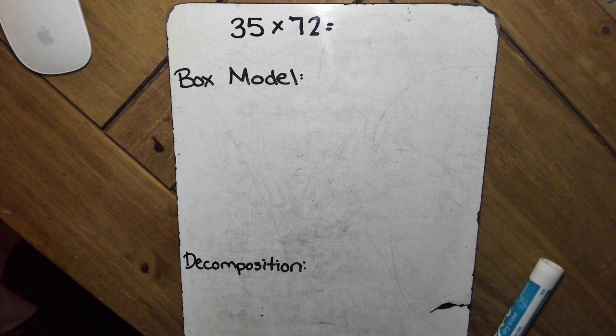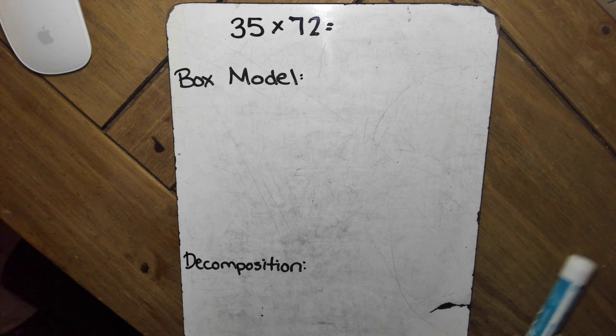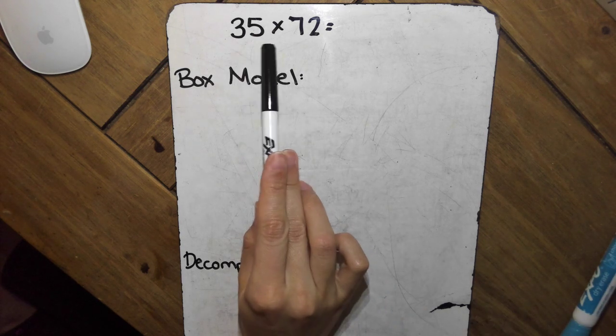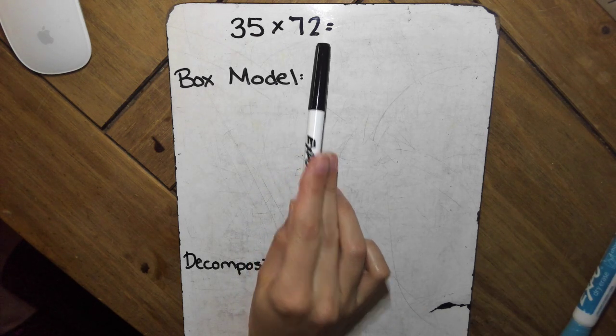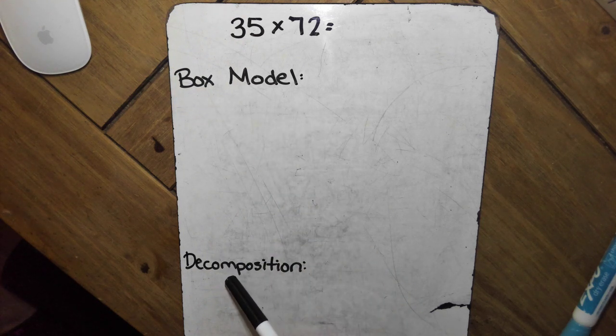Hello scholars, it's me, Ms. Hixson, here to go through the steps on how to solve two-digit by two-digit multiplication, for example, 35 times 72. And today we're going to use the box model strategy and decomposition.